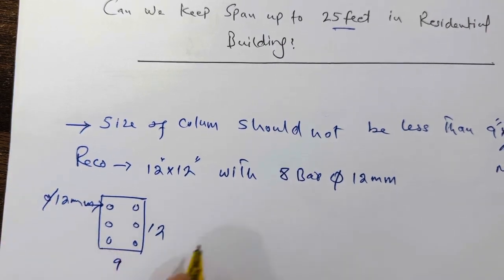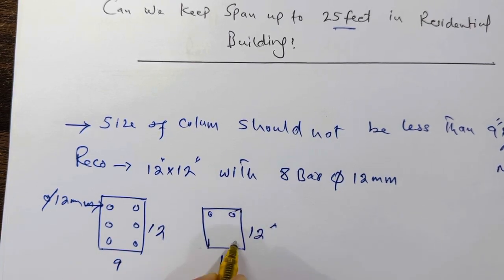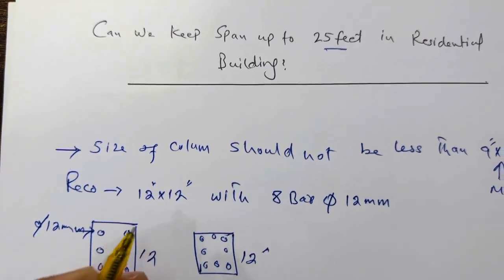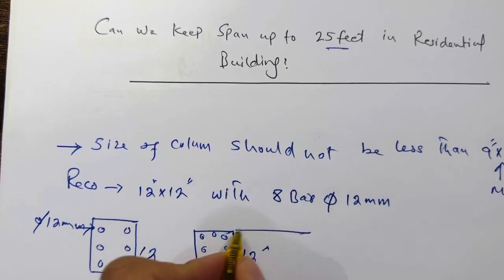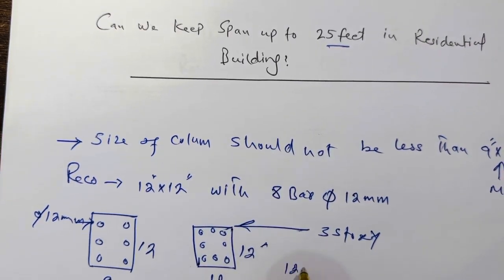And the second one is the size should be 12 inches by 12 inches with eight bars. This is for up to three story, if the span is up to 25 feet. Here the diameter should be 12 millimeter.